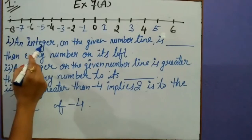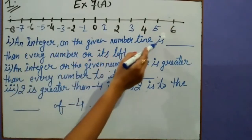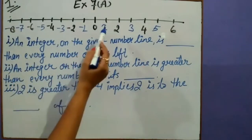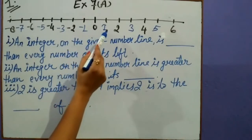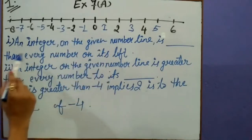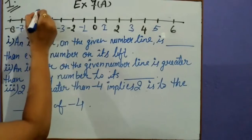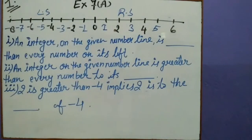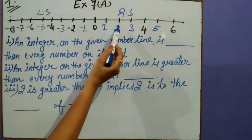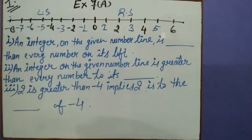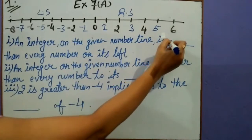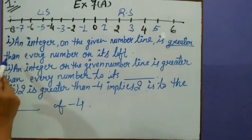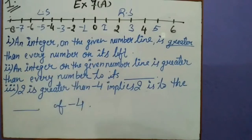First one: An integer on the given number line is blank than every number on its left. The left side and right side are visible here. A number on the right-hand side is always greater than a number on the left-hand side. So we will write here: greater. Our answer is greater than every number on its left.